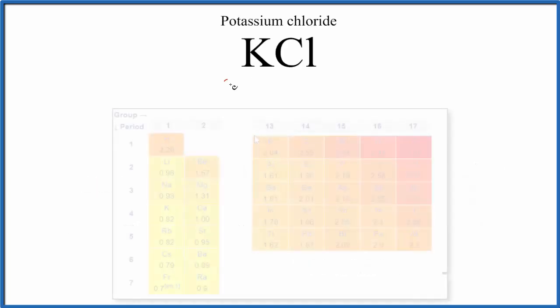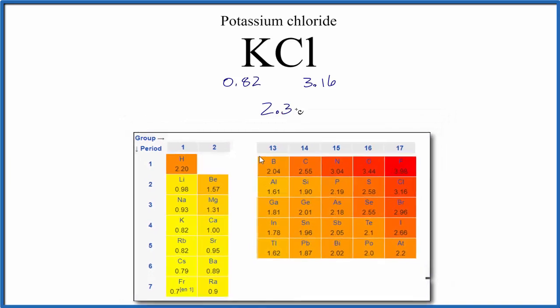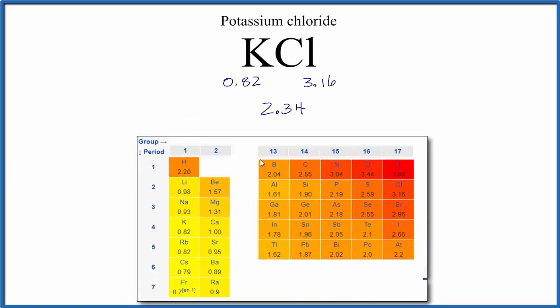For potassium, we have 0.82 for its electronegativity. Chlorine is 3.16. The difference between those two numbers is 2.34. So with a difference of 2.34, we have an ionic compound.